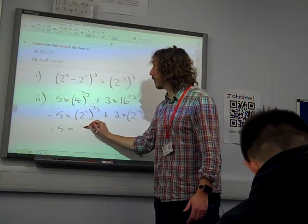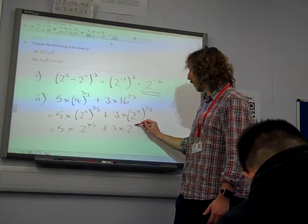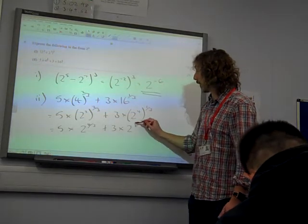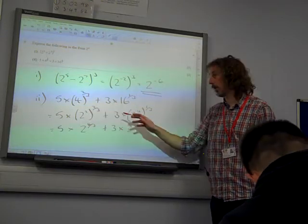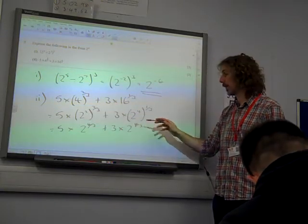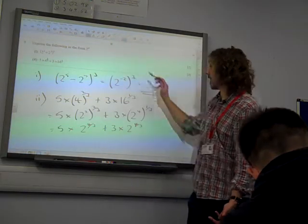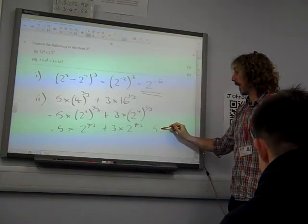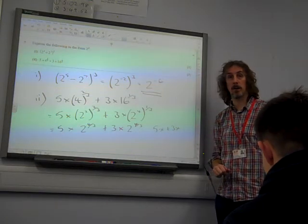5 times 2 to the 4 thirds, plus 3 times 2 to the 4 thirds. That's the big thing about this. If you look, 2 times 2 thirds is 4 thirds there, 4 times 1 third is 4 thirds there. Great. It's now kind of like writing 5x plus 3x, where x is 2 to the power of 4 thirds.